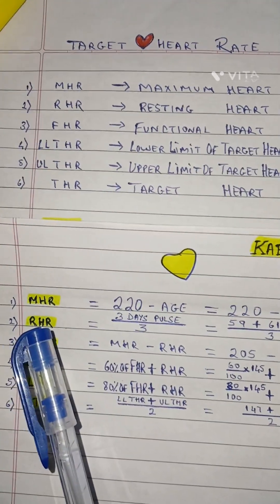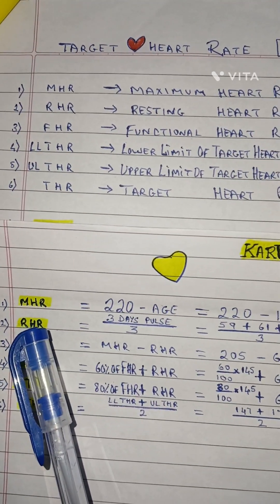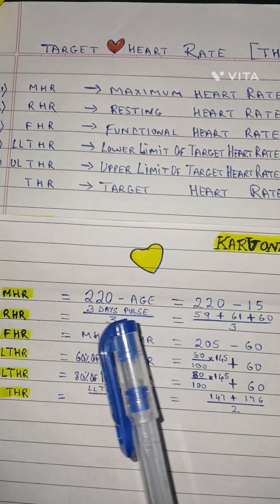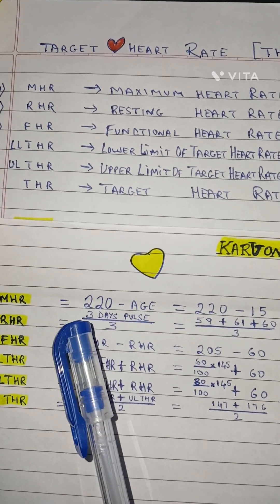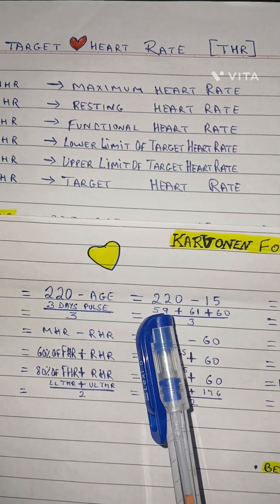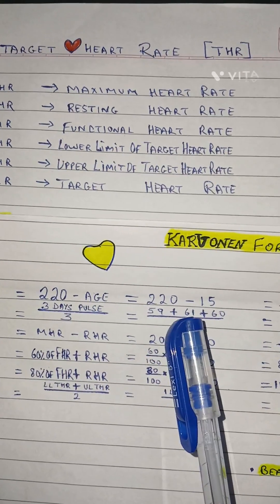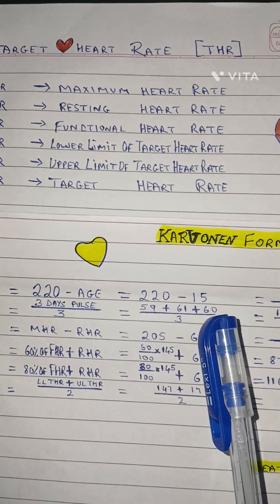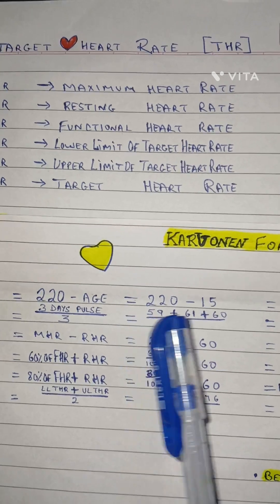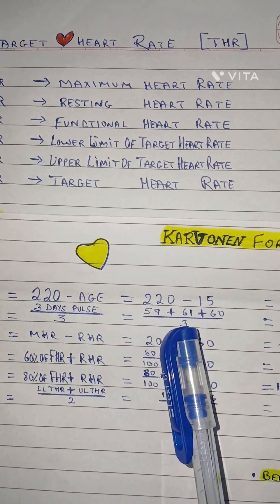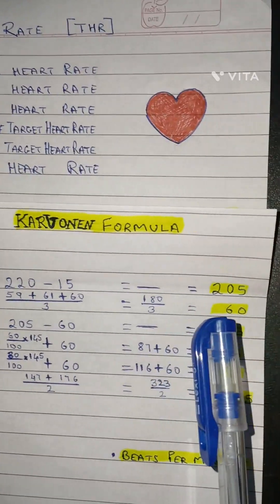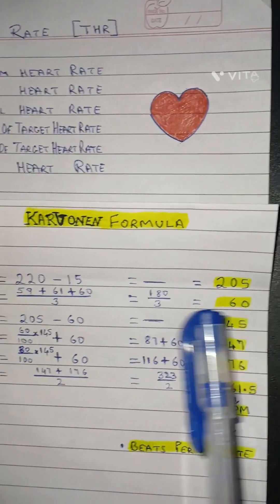Second step: RHR - Resting Heart Rate. Take 3 days of pulse readings and find the average by dividing by 3. Day 1: 61, Day 2: 60, Day 3: 59. Add them all and divide by 3. We get 180 divided by 3, which equals 60.